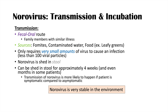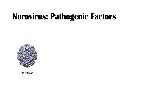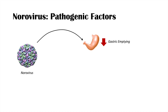The norovirus is very stable in the environment, so we have special ways to deal with it, which will be covered later. Once an individual becomes infected, the incubation period is roughly 24 to 48 hours — that's how long it takes to start showing symptoms. The norovirus affects the gastrointestinal system, including the stomach and intestines. In the stomach, it decreases gastric emptying, which is hypothesized to be the reason why norovirus causes nausea and vomiting.